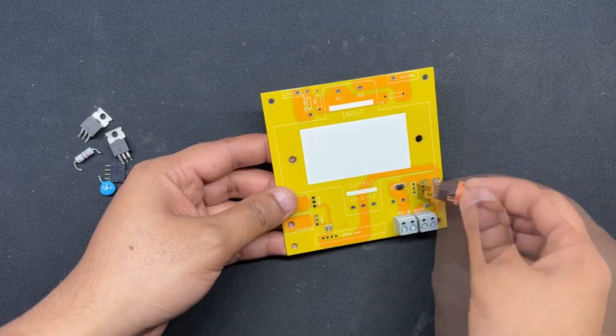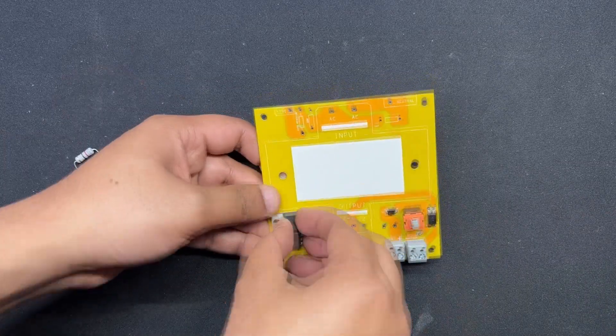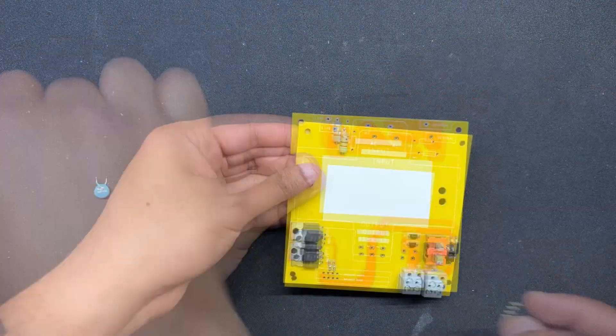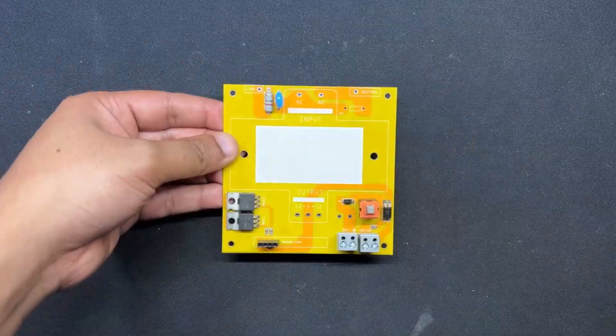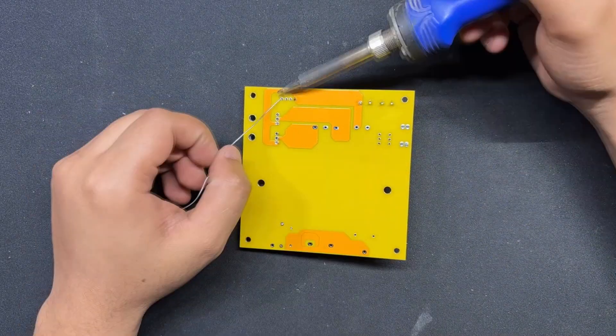After soldering all the SMD components, we begin the THT assembly process, which begins by installation of all through-hole components such as MOSFET, resistors, CON2 connector, etc. on driver board.